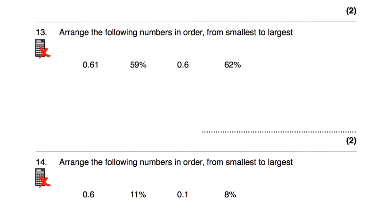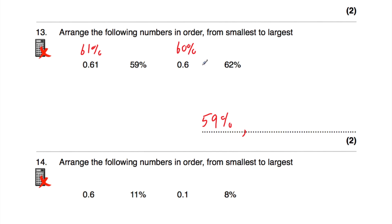Question number thirteen asks us to arrange the following in order from smallest to largest. Let's write them all as percentages: 0.61 is 61%, and 0.6 times 100 is 60%. Now putting them in order, the smallest is 59%, then 0.6 (which is 60%), then 0.61 (which is 61%), and then the biggest is 62%. So those numbers are in order from smallest to largest.